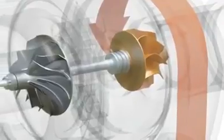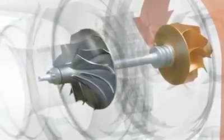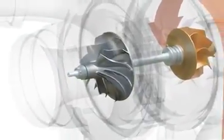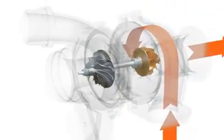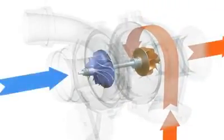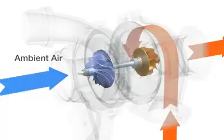On the other side of the turbine wheel, connected by a shaft, is a compressor wheel. These two wheels turn together, and the rapid spinning allows the compressor to suck in large amounts of ambient air and compress it.